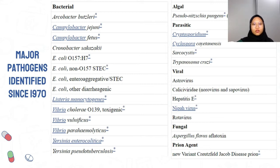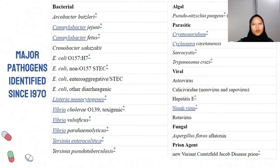From this slide, you can see the list of foodborne agents that have emerged in the past three decades. They include bacteria, viruses, parasites, biotoxins, and prions. The changes over time show that the list is increasing — the list of foodborne pathogens is still expanding to this day.